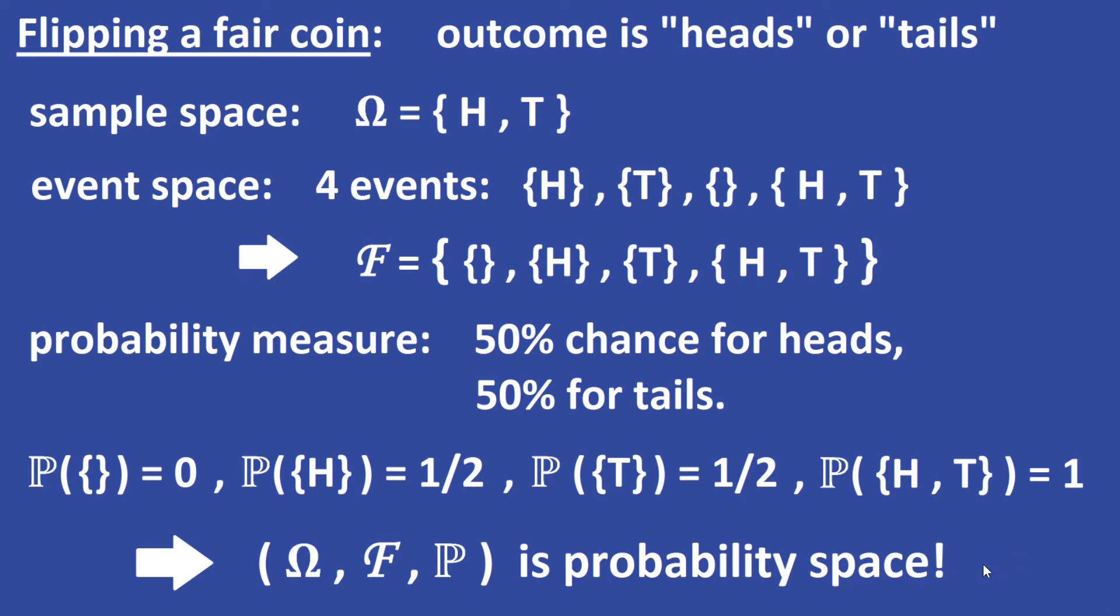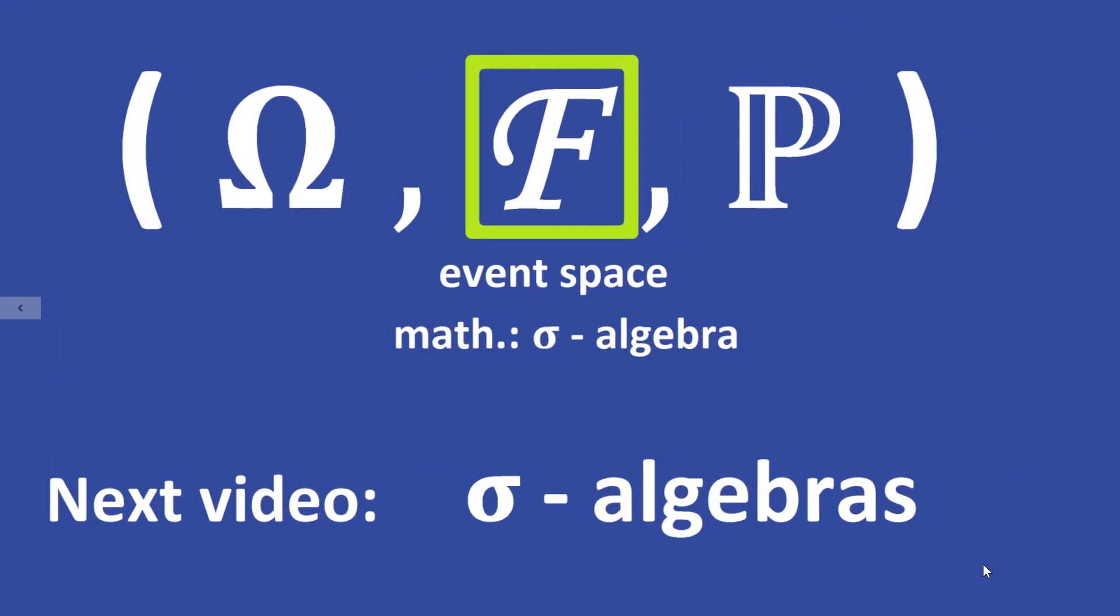In the next video I will start defining probability spaces properly. We will take a little closer look at the second element of a probability space, the sigma algebra F, which contains the measurable events. So the next video will be about sigma algebras.